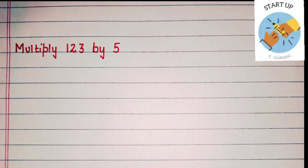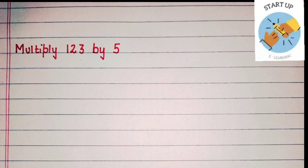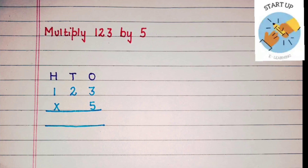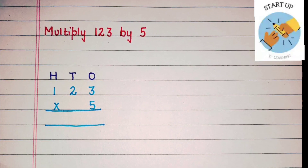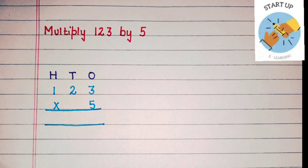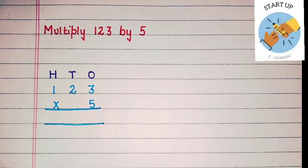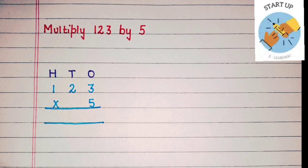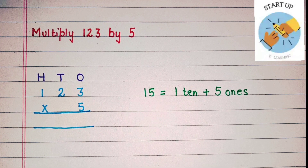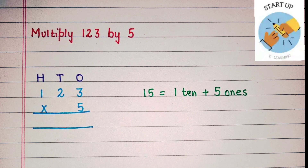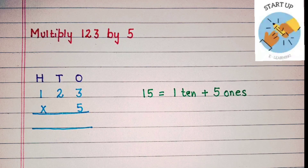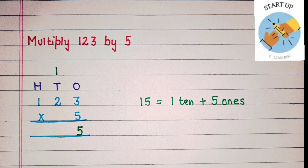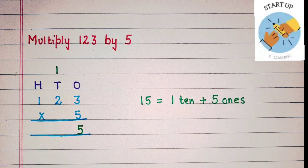Let's solve one more example. Multiply 123 by 5. Let's arrange according to its places: 3 will be written under 1's, 2 will be written under 10's, and 1 will be written under 100's. The number by which we are multiplying is 5 and it is a single digit number, so it will be written under 1's, under 3. First of all, we will multiply 5 by 3. 5 threes are 15. It has 1 ten and 5 ones, so the ones digit, that is 5, will be written under 1's and 1 will be carried over on 10's.